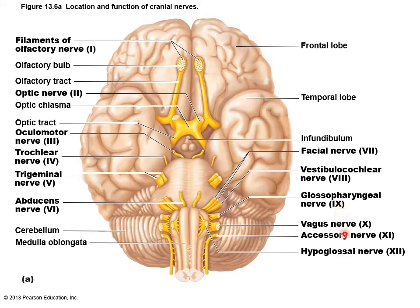Cranial nerve number ten, the vagus, is probably the most complex. It picks up some taste from the oral cavity, but it's the only cranial nerve that extends beyond the head and neck region. It controls 75 to 90 percent of the parasympathetic output — innervating the heart, lungs, and visceral organs — so it affects quite a bit of autonomic functioning as well as having some connection to taste.